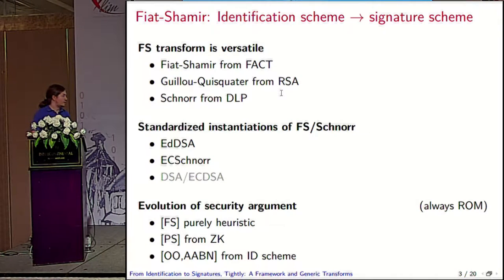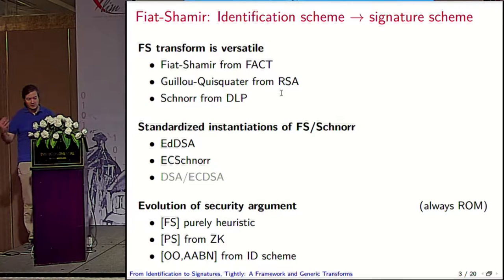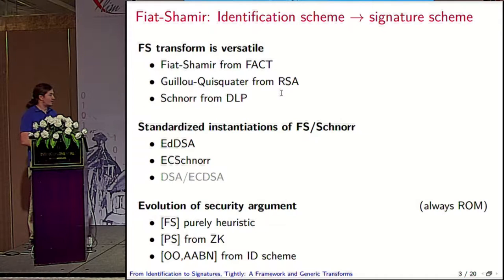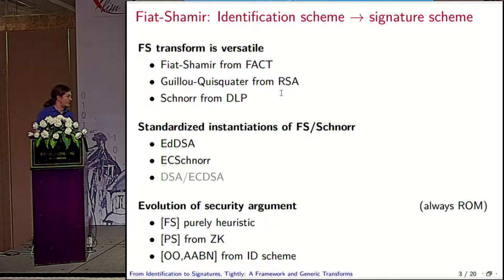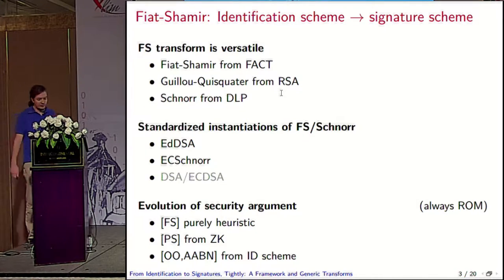What I put down here on this slide is a brief history of the security arguments for the Fiat-Shamir transform. When it was proposed in 1986, there was just a hope for security — security was not understood. This started with work around 1995-96, and then in the early 2000s the reductions were made to the security properties of identification schemes. In principle, we try to extend here to a fourth bullet point.